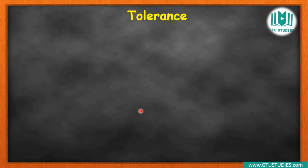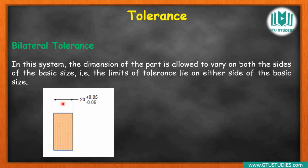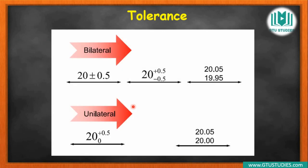The second type of tolerances is bilateral tolerances. The basic size means that in this system, the dimension of the part is allowed to vary on both sides of the basic size. These tolerances are known as bilateral tolerances. For example, if 20 is the basic size, the upper limit is plus 0.05 and the lower limit is minus 0.05. Bilateral tolerances can also have unequal plus and minus values — the plus and minus values can change.